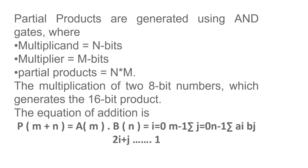The equation of addition is: P(m + n) = A(m) × B(n) = summation for i from 0 to m−1 and j from 0 to n−1 of A_i × B_j × 2^(i+j).